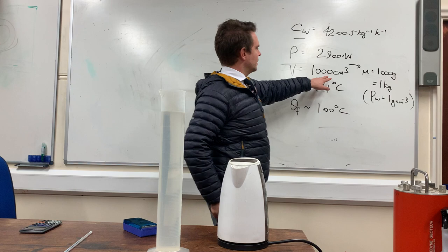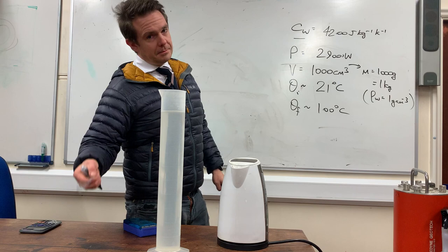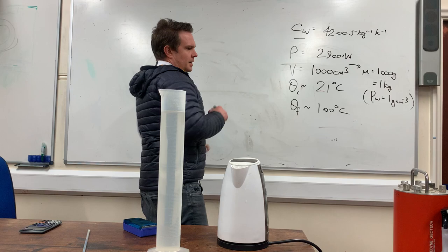I've got 1,000 centimetre cubes of water, which is 1,000 grams because the density of water is 1 gram per centimetre cube, so that has a mass of a kilogram. I'm going to bring it from 21 degrees, which is its current temperature, pre-measured with a thermometer, up to 100 degrees Celsius, the boiling point of water.